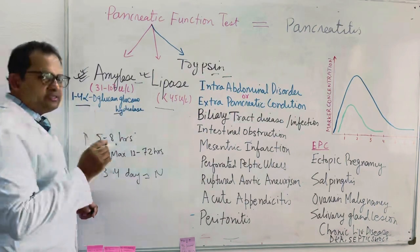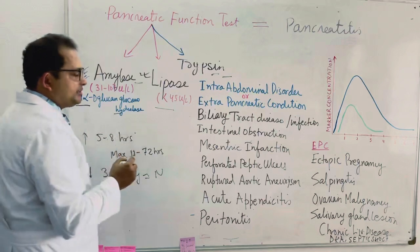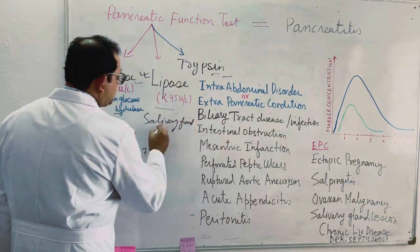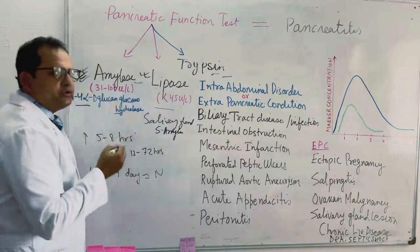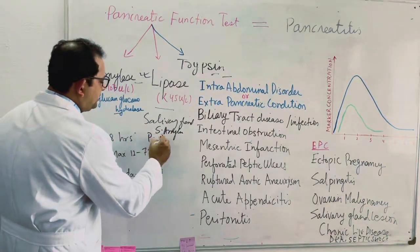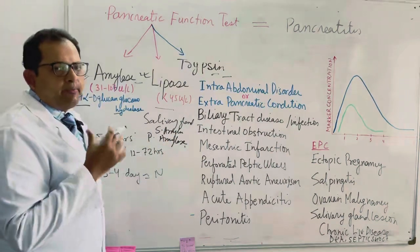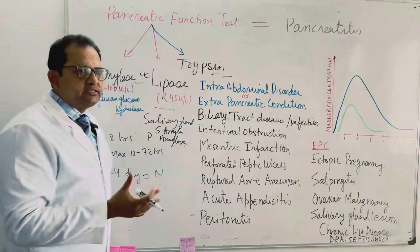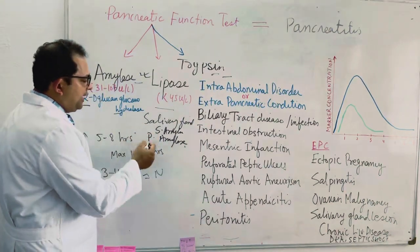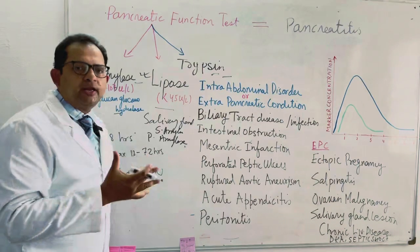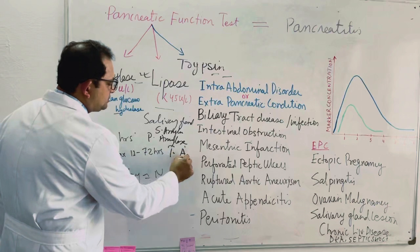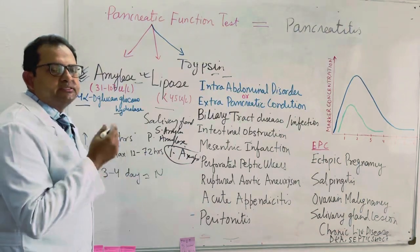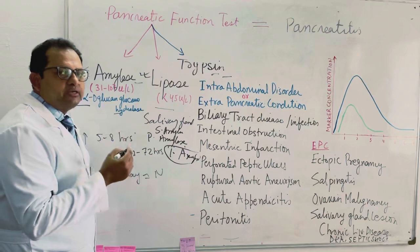Amylase is the only pancreatic enzyme which has two secreting organs: one is the salivary gland, called salivary amylase, and the other is the pancreas, called pancreatic amylase. The amylase content in human serum which we diagnose actually consists of both salivary amylase and pancreatic amylase — what we analyze in serum is called total amylase. Interestingly, total amylase consists of only 60 to 70 percent pancreatic amylase.